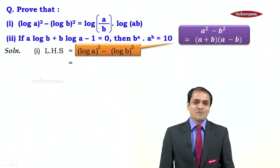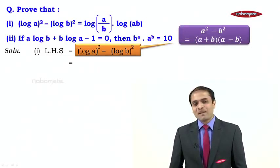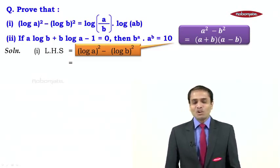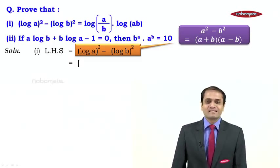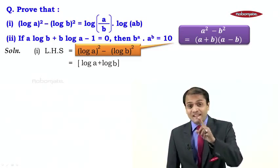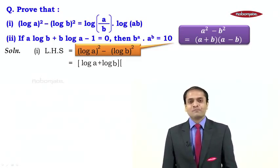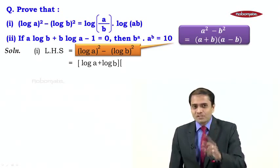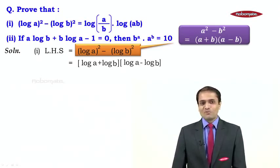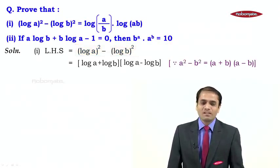If you realize, this expression is in the form a² minus b², which can be factored as (a + b)(a − b). So what we get in the next step is (log a + log b)(log a − log b). The first bracket represents the sum and the second bracket represents the difference of the two log terms.